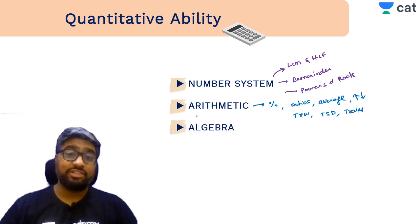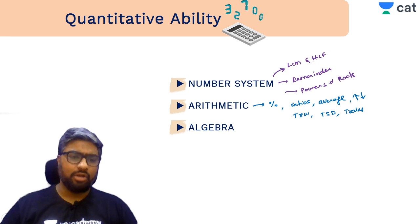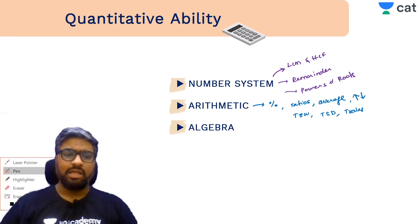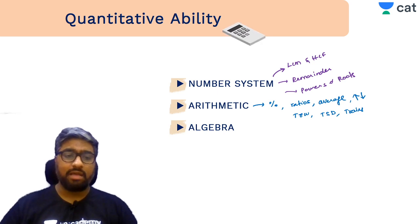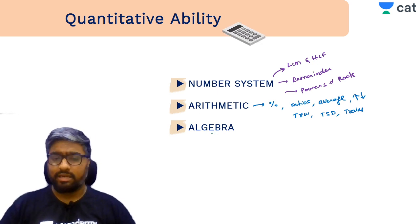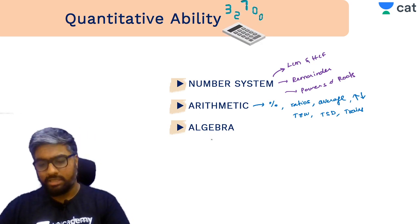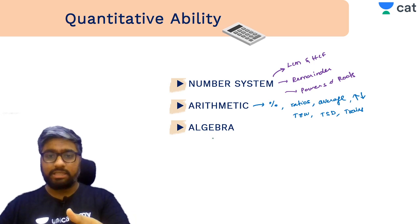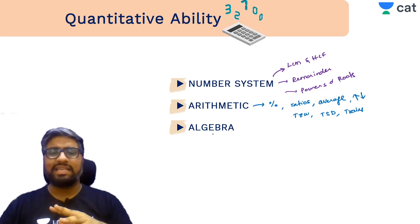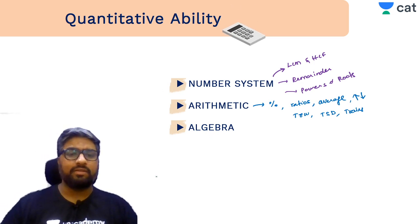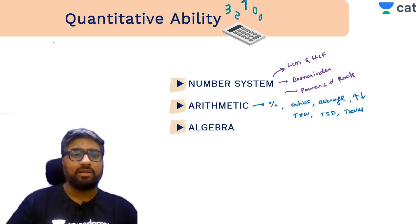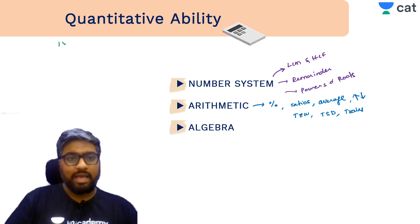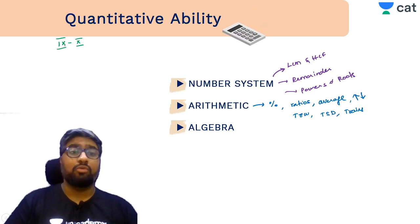Then comes Algebra — something a lot of you are worried about because maybe the last time you did (a+b)² was in ninth or tenth grade. Don't worry — it's not that deep. All these concepts are found in 9th and 10th standard math books. Under Algebra you have equations — linear equations, quadratic equations — inequalities, identities, functions, and logarithms.